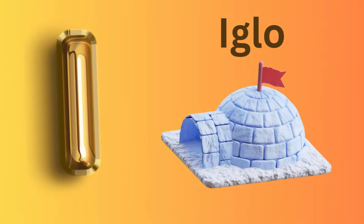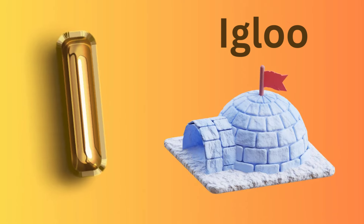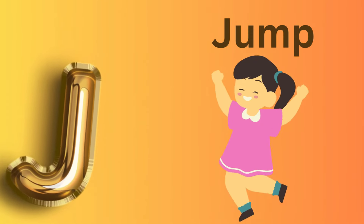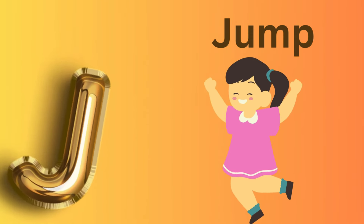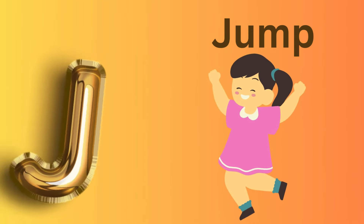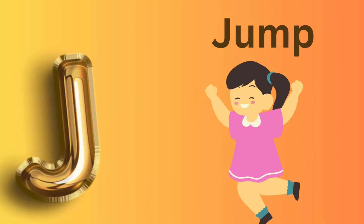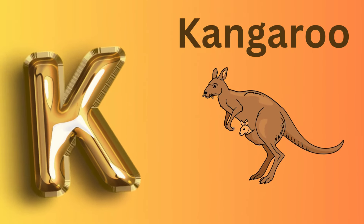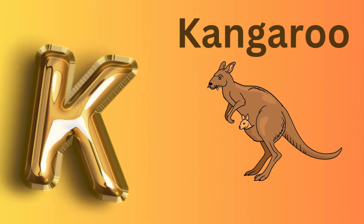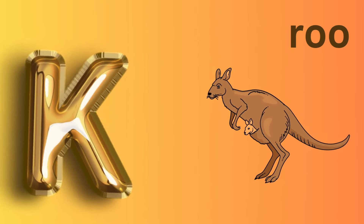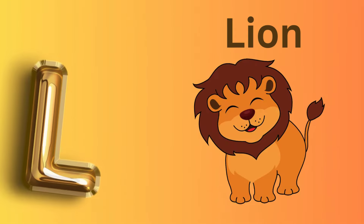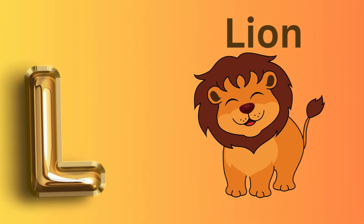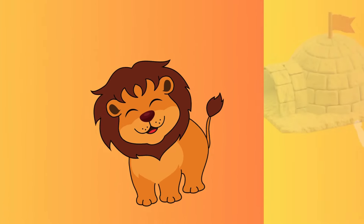I is for Igloo, I-I-Igloo. J is for Jump, J-J-Jump. K is for Kangaroo, K-K-Kangaroo. L is for Lion, L-L-Lion.